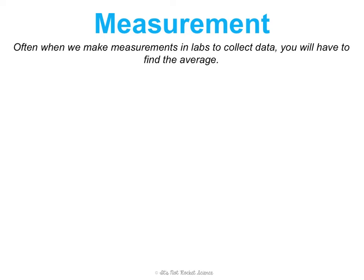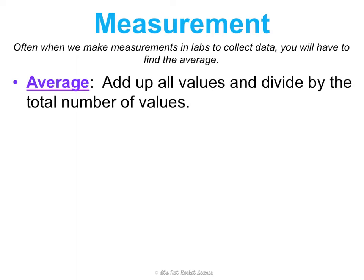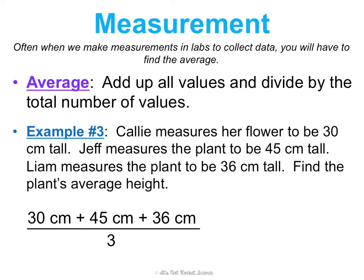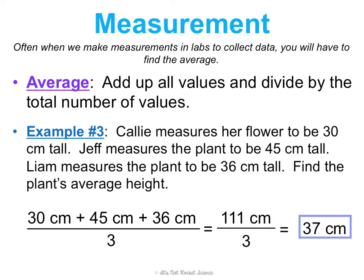Often when we make measurements in labs to collect data, you'll have to find an average. An average is where you add up all the values and divide by the total number of values. For example, Callie measures her flower to be 30 centimeters tall, Jeff measures it to be 45 centimeters tall, and Liam measures it to be 36 centimeters tall. To find the average height, we add 30 plus 45 plus 36 and divide that total by three. That's 111 divided by 3, and we get 37 centimeters.